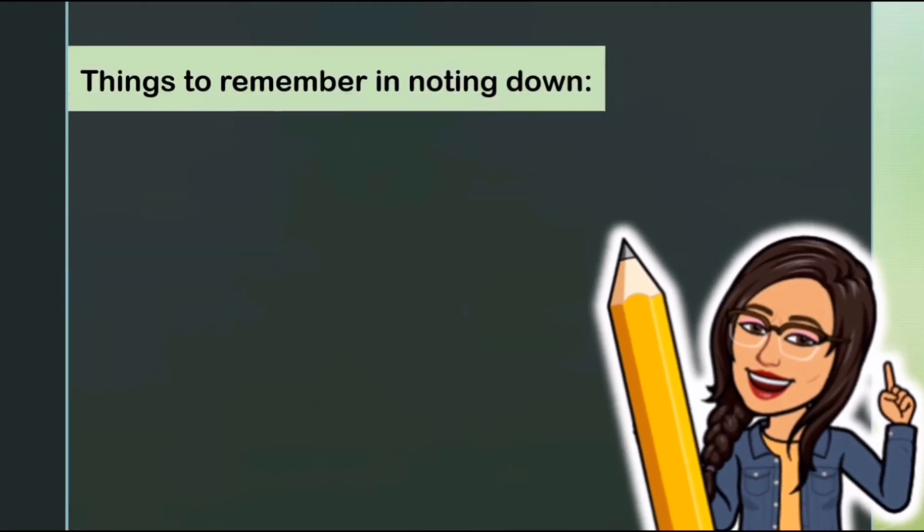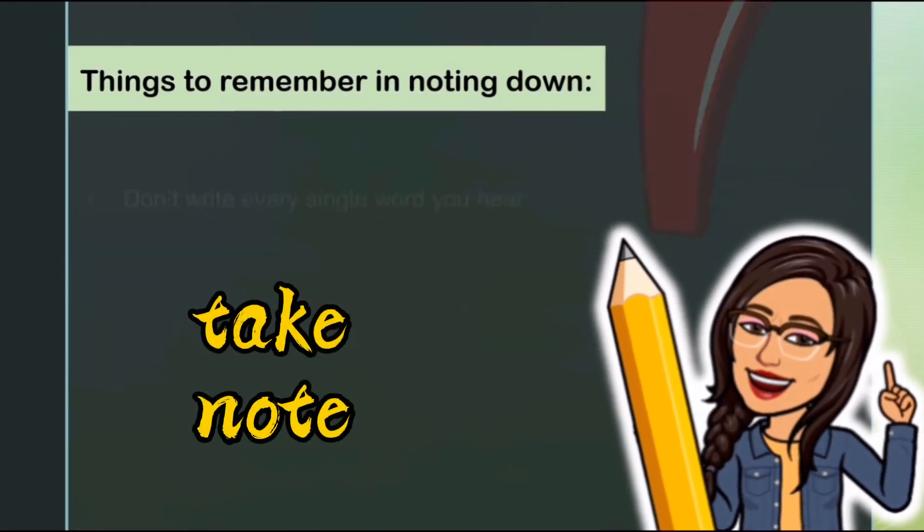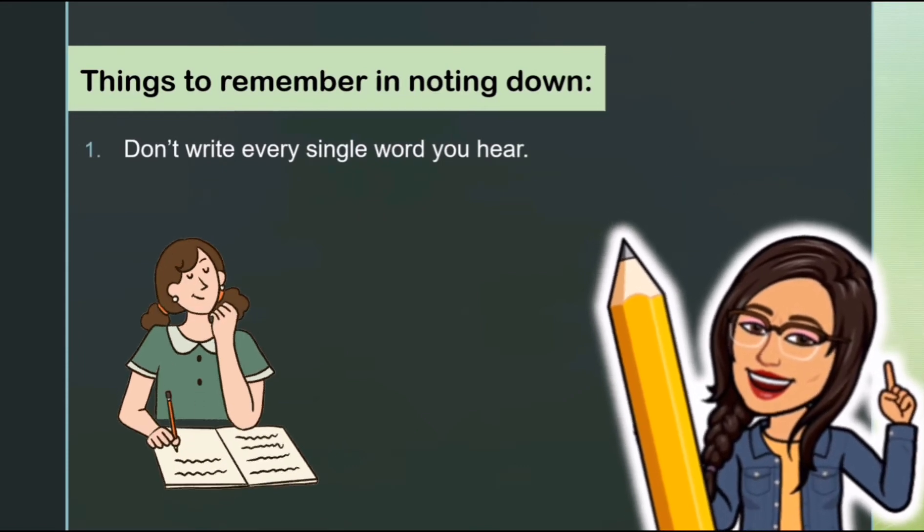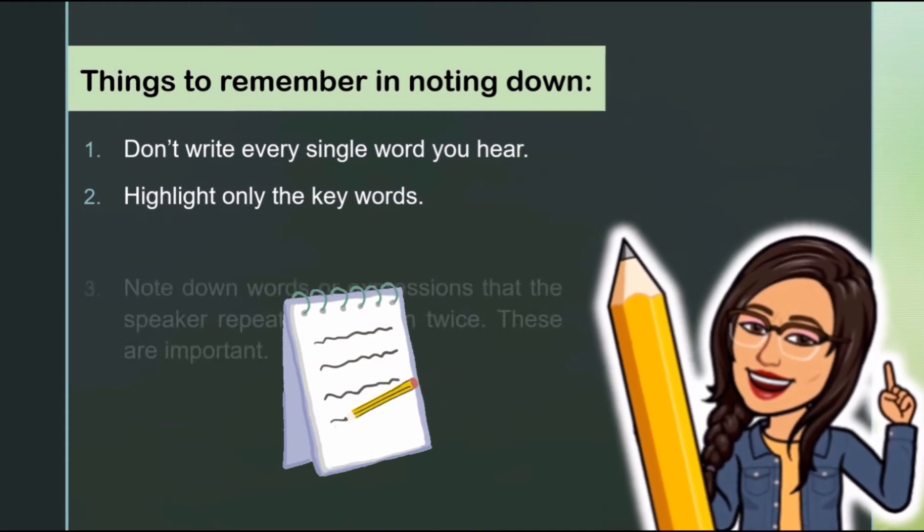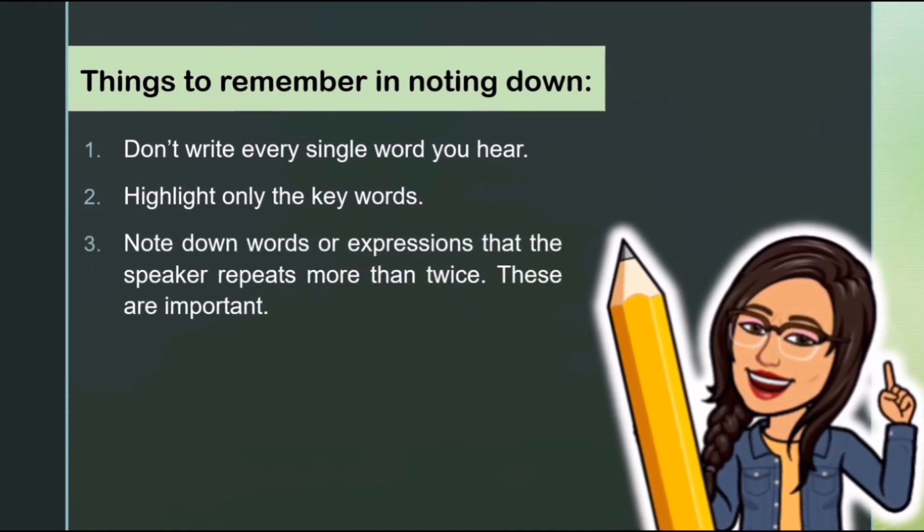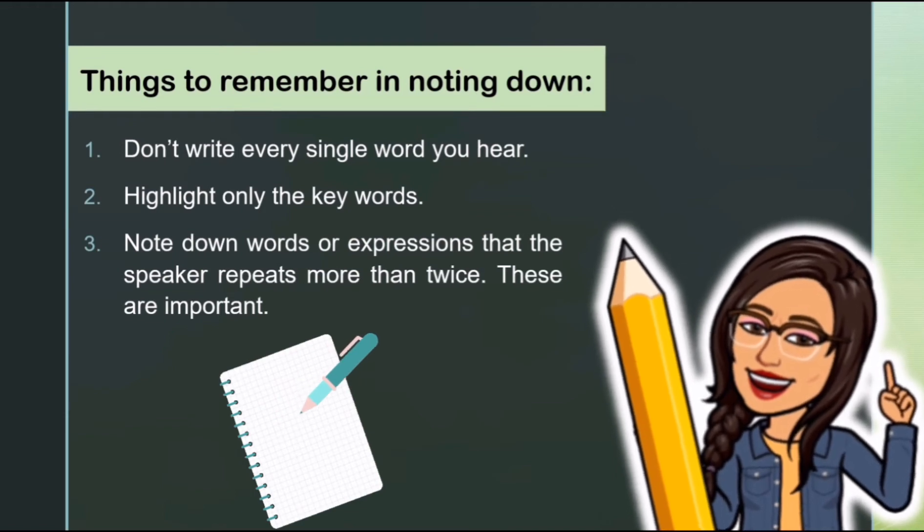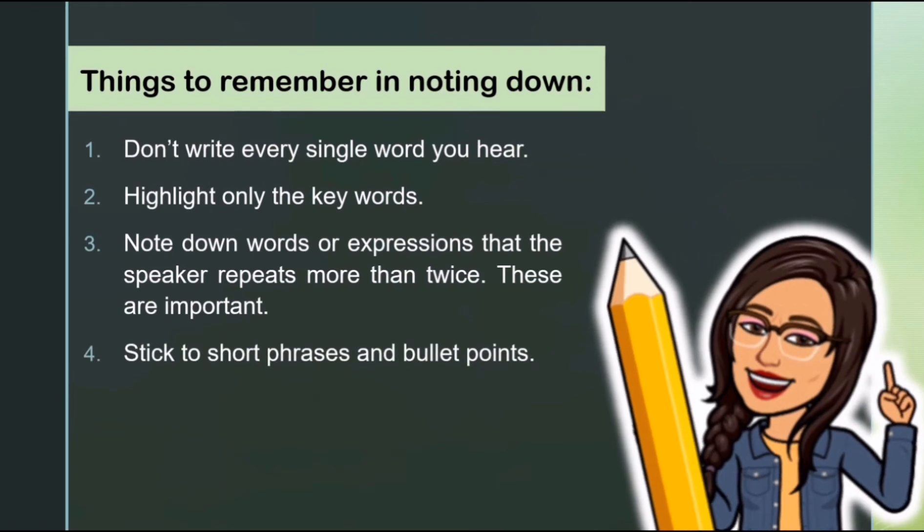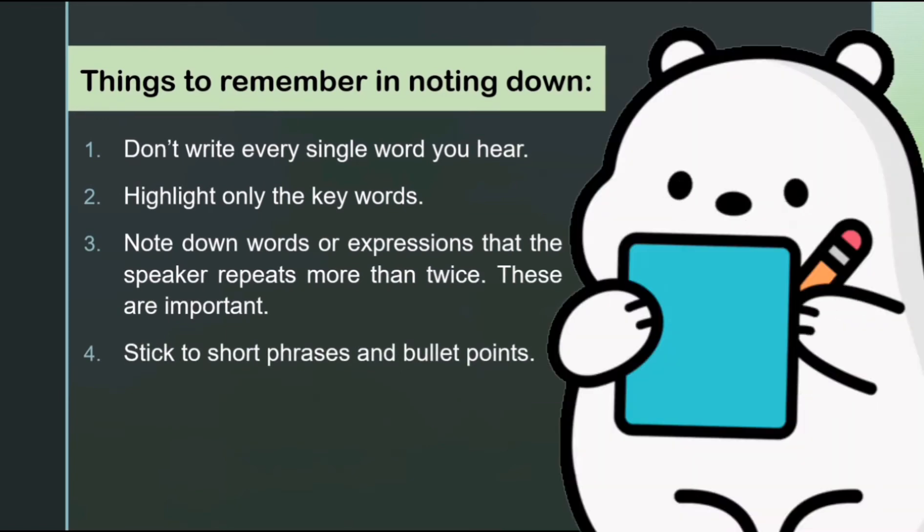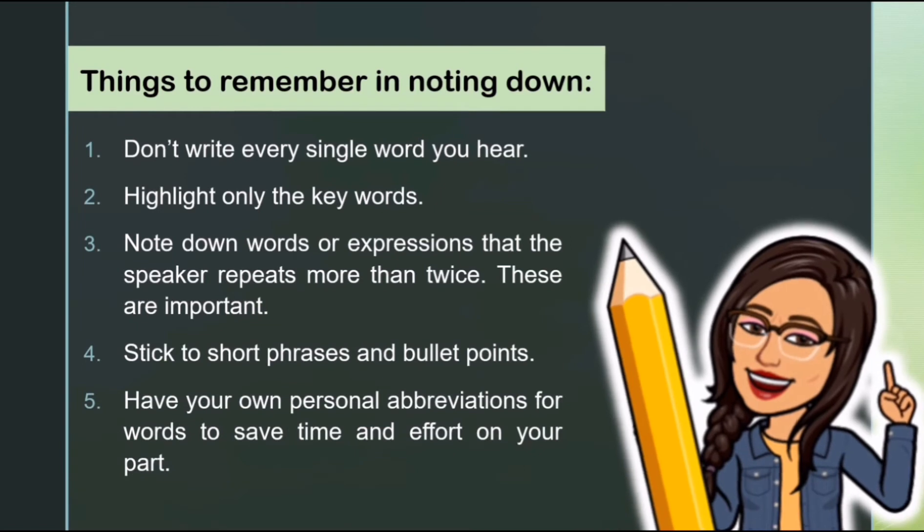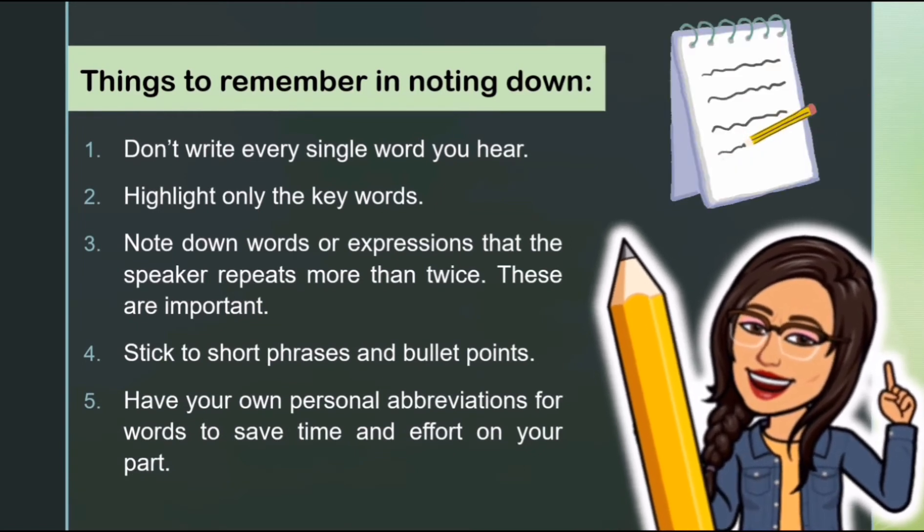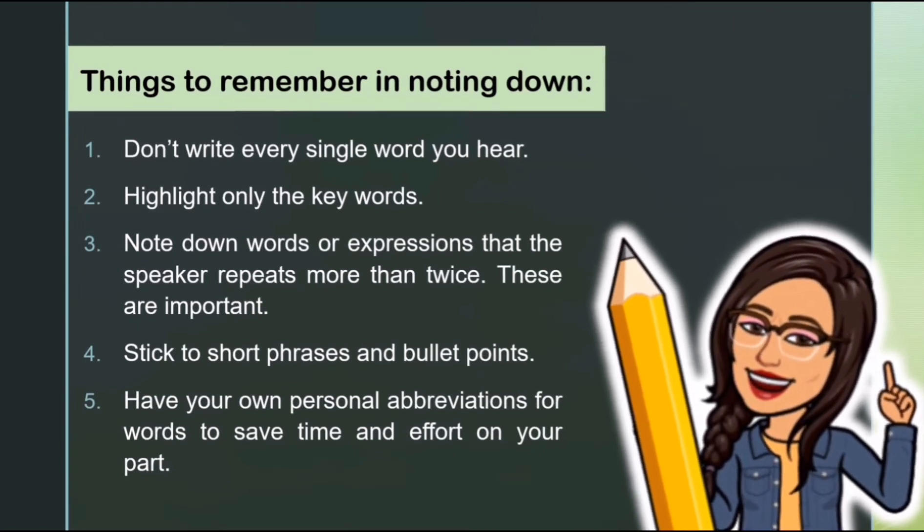There are some techniques in taking down notes. Things to remember in noting down: Number one, don't write every single word you hear. Number two, highlight only the key words. Number three, note down words or expressions that the speaker repeats more than twice - these are important. Number four, stick to short phrases and bullet points. Number five, have your own personal abbreviations for words to save time and effort on your part.